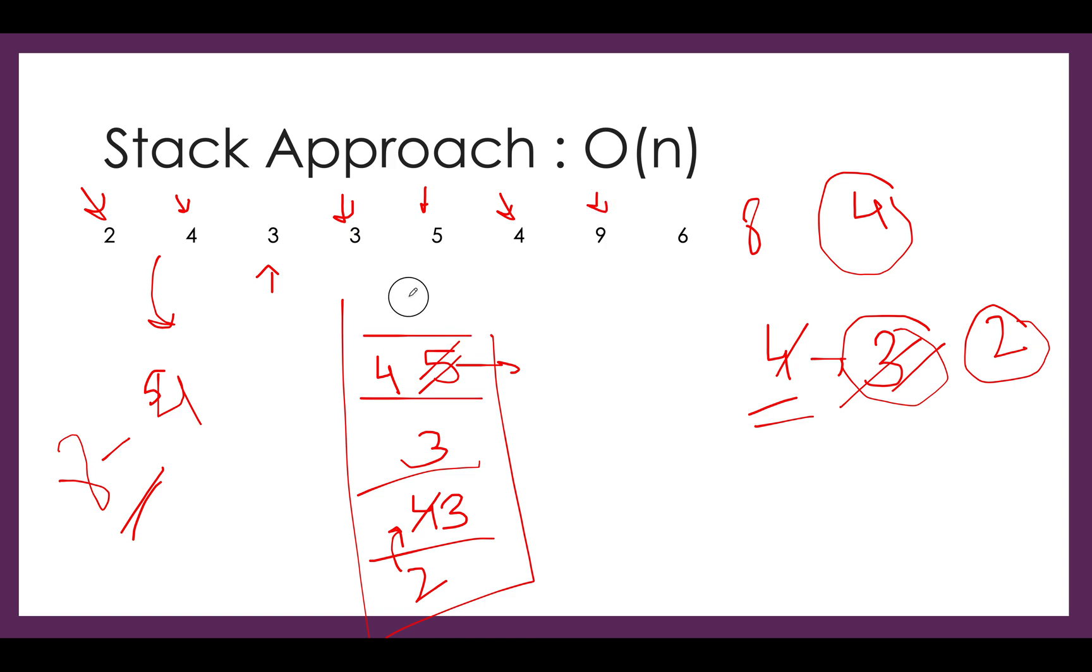We move ahead in the iteration. We got 9, 9 gets added to the stack. We move ahead, we got 6. We compare 9 with 6. 9 is of greater value, can be safely removed. We removed 9, added 6, and reduce the count to 1. So what remains is 1 now. What do we have?